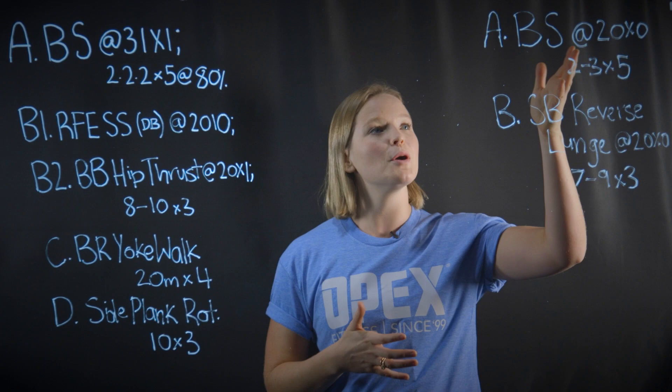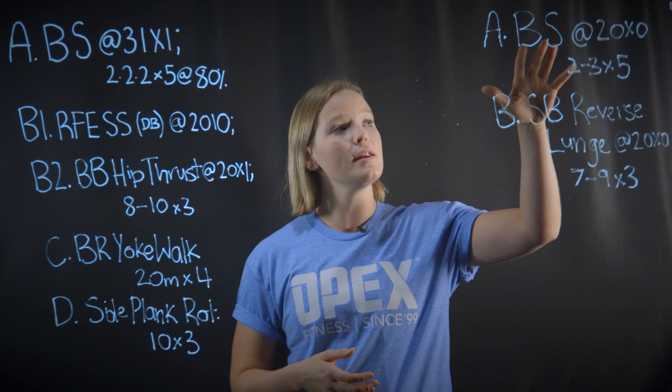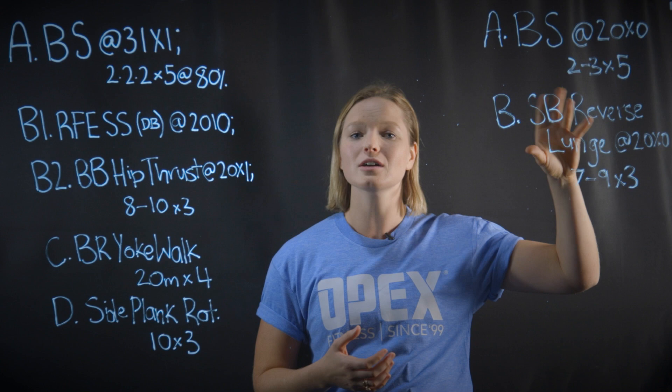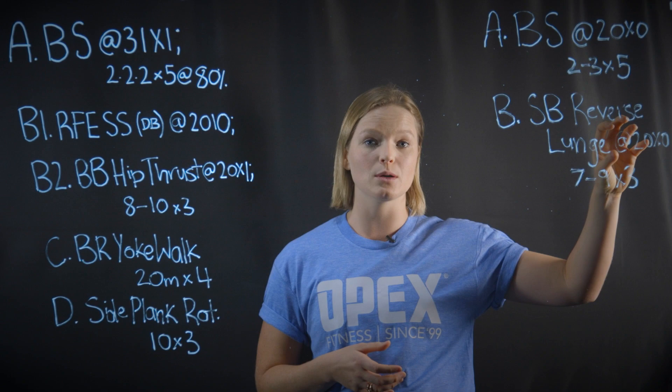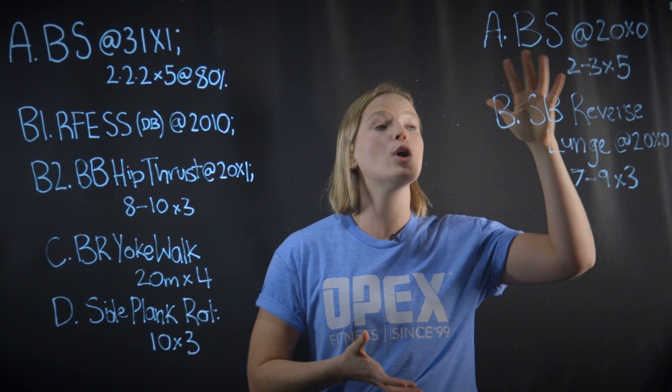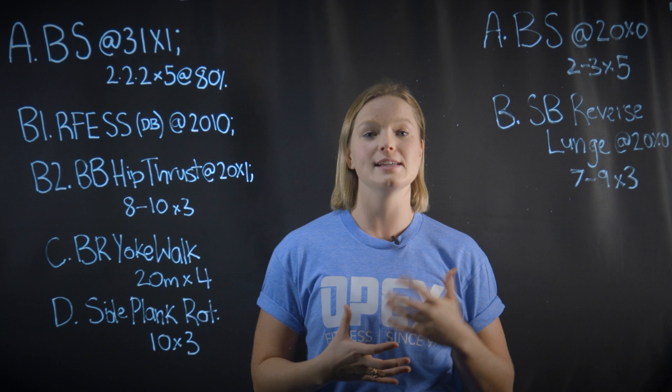Now contrast that over here. My client is in an intensification phase, so they are doing a back squat at 2-0-X-0 for two to three reps for five sets. And then closing it out simply with a safety bar reverse lunge at 2-0-X-0, seven to nine reps for three sets. So much less work, but because of the lower volume they're going to be able to really increase the intensity, go much heavier, and get a much harder dose-response from that.